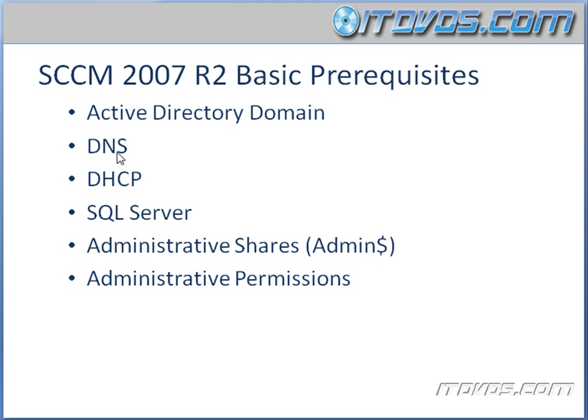You also need DNS, and normally if you've got an Active Directory domain, you've got DNS. You need a DHCP server, and preferably the DHCP server is not on the same server that we're going to be installing System Center Configuration Manager 2007 R2 on.